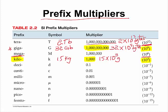Deci means 10 to the negative 1, or 0.1. Centi means 10 to the negative 2, or 0.01.